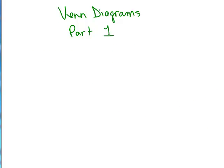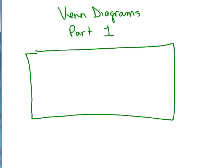This is the introduction to Venn diagrams, so you already have to know a little bit about sets. What we're going to do is draw a box, a rectangle if you will, to represent the universal set.